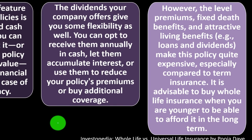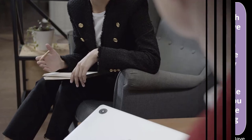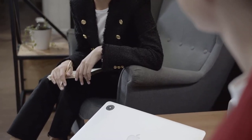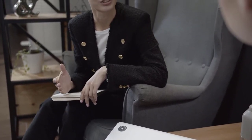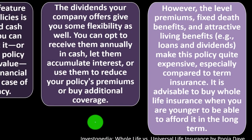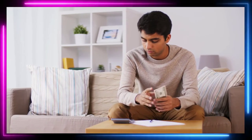However, the level premiums, fixed death benefits, and attractive living benefits — such as loans and dividends — make this policy quite expensive, especially compared to term insurance. Mixing together insurance and investment, tax deferral, and so on makes it more expensive than just buying term insurance and investing the difference. It is advisable to buy whole life insurance when you're younger to be able to afford it in the long term, so that the cash value has time to work its benefits.